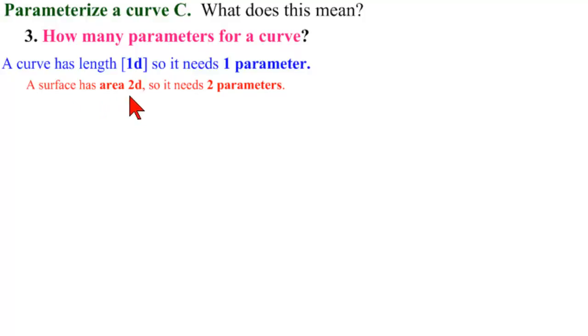A surface has area, which is two-dimensional measurement, so it will need two parameters. And a solid has volume, which is a three-dimensional measurement, so it will need three parameters.